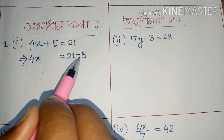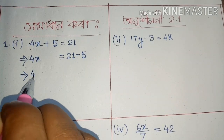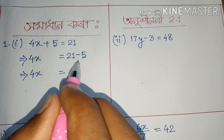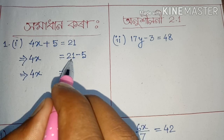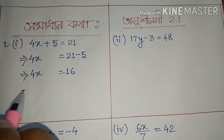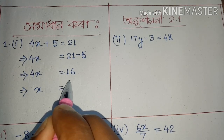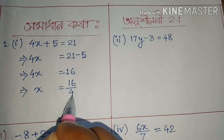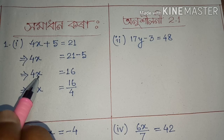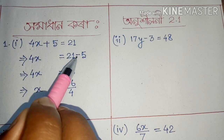The next step: 4x equals 21 minus 5. So 4x equals 16. X equals 16 by 4. Four two, four two, four two — so x equals 4. The problem has a key point: if there is a minus, it becomes plus when moved to the other side.